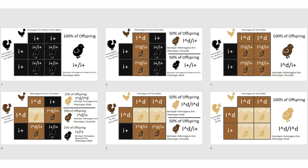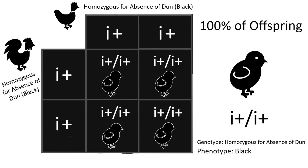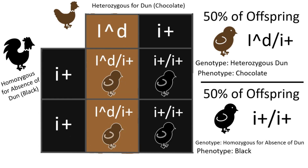So with that, let's go into the six different Punnett squares related to the breeding of black, Dunn, and khaki. The first Punnett square is a homozygous black bred to a homozygous black. The gene symbol for the absence of Dunn is a lowercase i with a plus sign to represent that it is the wild type. Because the Dunn gene is autosomal, meaning it is not located on a sex chromosome, it doesn't matter which gender parent has what genotype. In this pairing, 100% of the offspring should be homozygous for black, or the absence of Dunn.